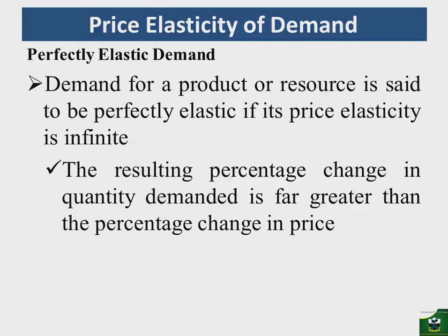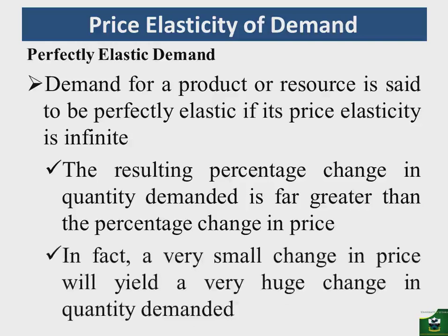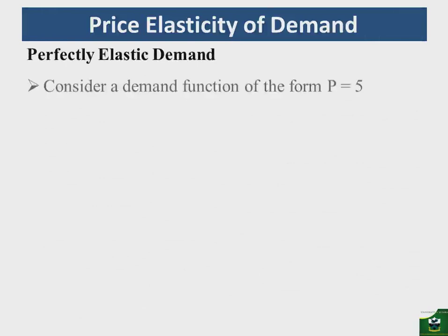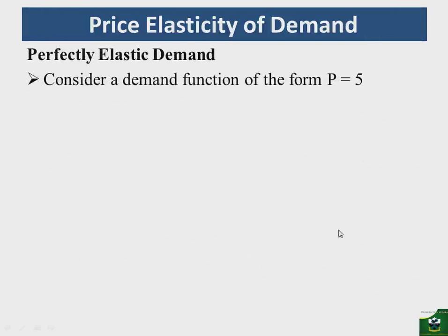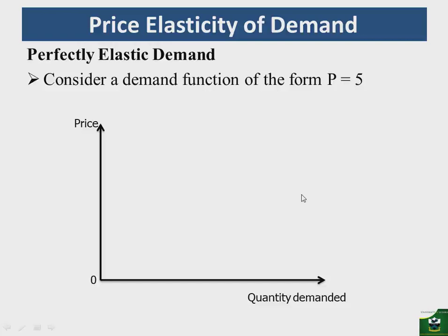With perfectly elastic demand, the graph will not obey the law of demand because it will be horizontal. So graphically, if we consider a demand function of the form P = 5, then with price on the vertical axis and quantity demanded on the horizontal axis, the demand curve will be horizontal — a straight line — and the elasticity coefficient will be infinite at that price of 5.